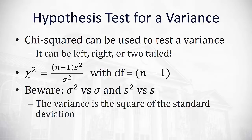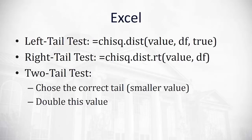The chi-squared also has degrees of freedom — it's going to be the sample size minus 1. In Excel, we can calculate the areas for our p-values. If it's a left-tailed test, we'll use CHISQ.DIST, open a parenthesis, type in the value of chi-squared, comma, the degrees of freedom, comma, and we'll always say TRUE to get the cumulative probability.